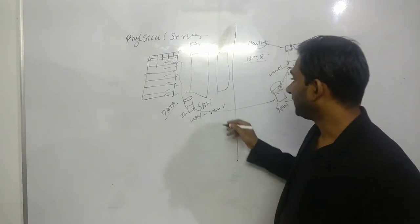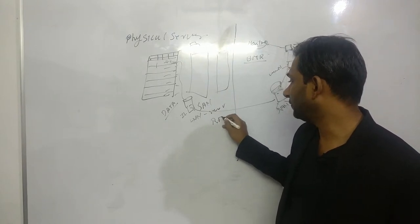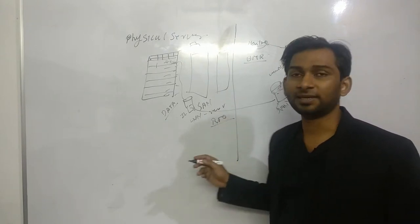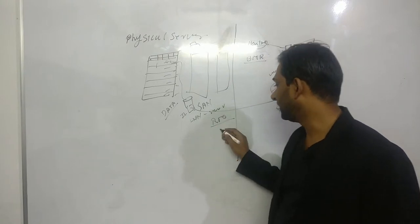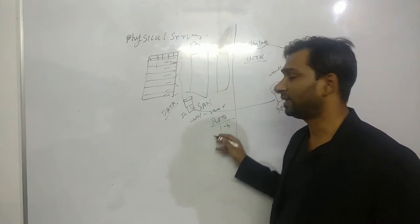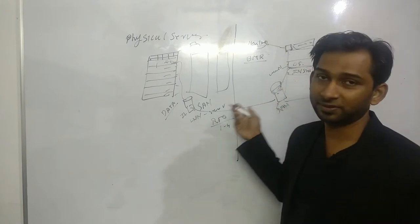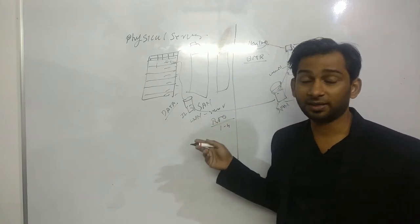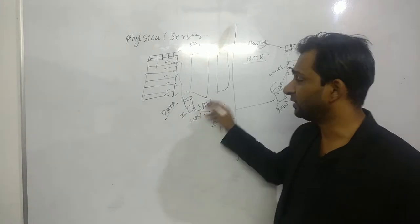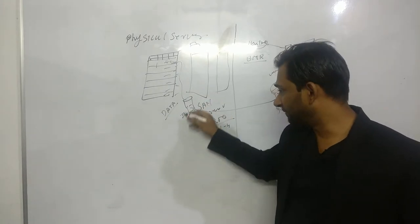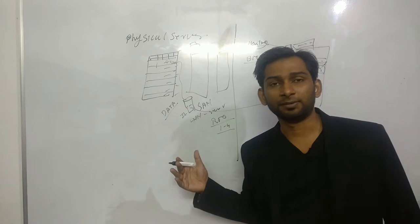When you boot from SAN, the RTO is very low — you can achieve 1 to 4 hours for up to around 10 servers. If everything is scripted — the LUN mapping and all those steps — it is achievable within that window.